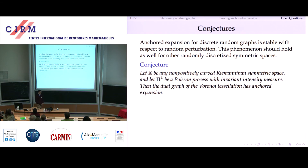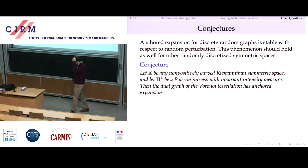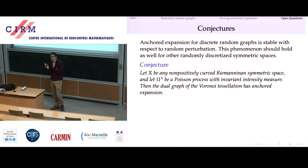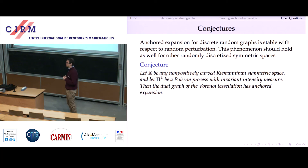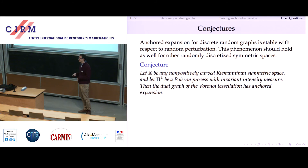Since this work was done, we were able to get a proof which is much different in flavor and works in d-dimensional hyperbolic space. I think the truth should be much more general: for any non-positively curved Riemannian symmetric space, if you put an invariant Poisson process on it, you should have positive anchored expansion. This would be a spectacular theorem, but so far it's only known partially even for even d-dimensional hyperbolic space.